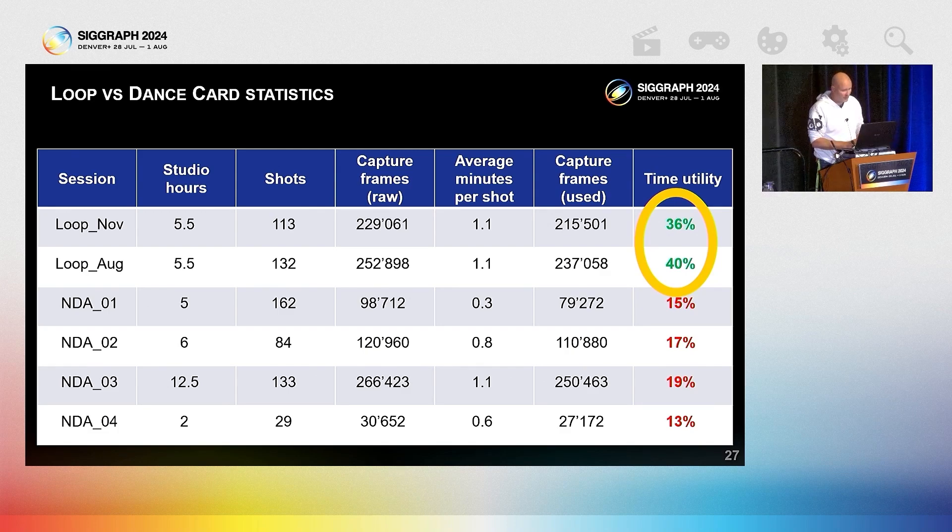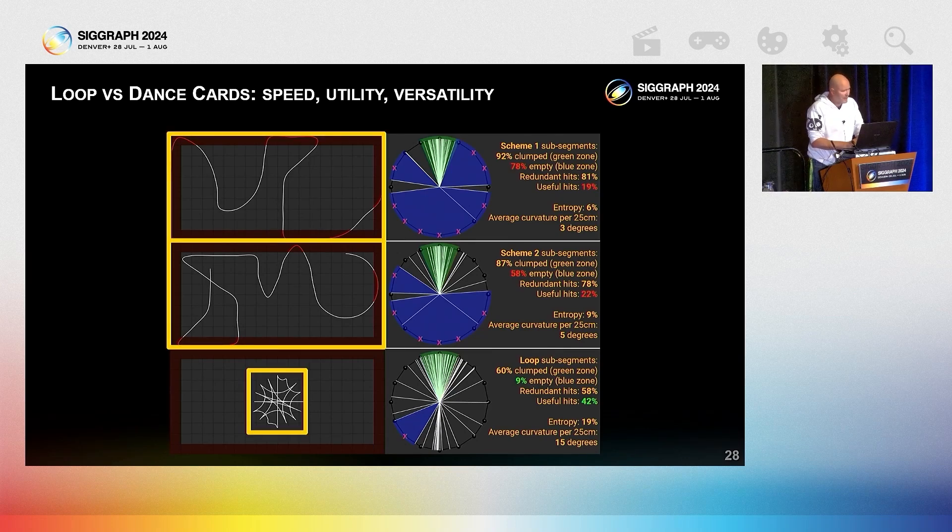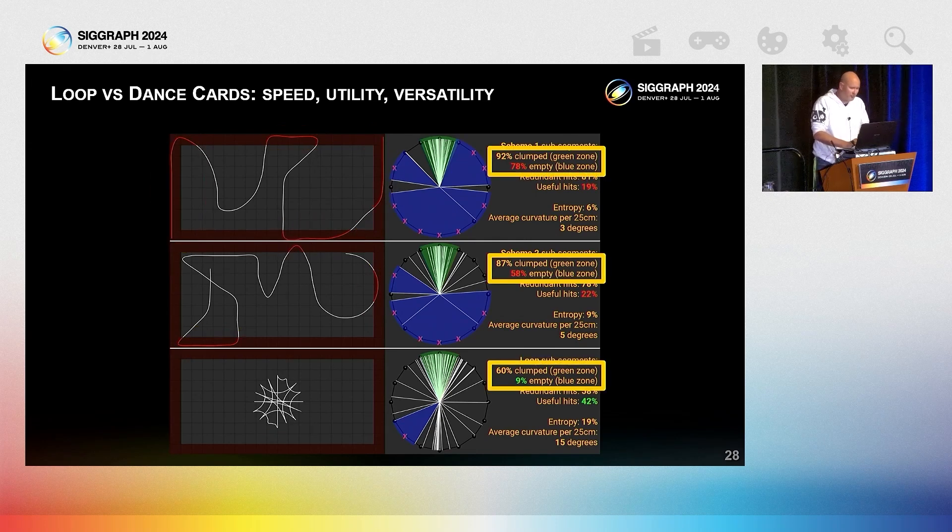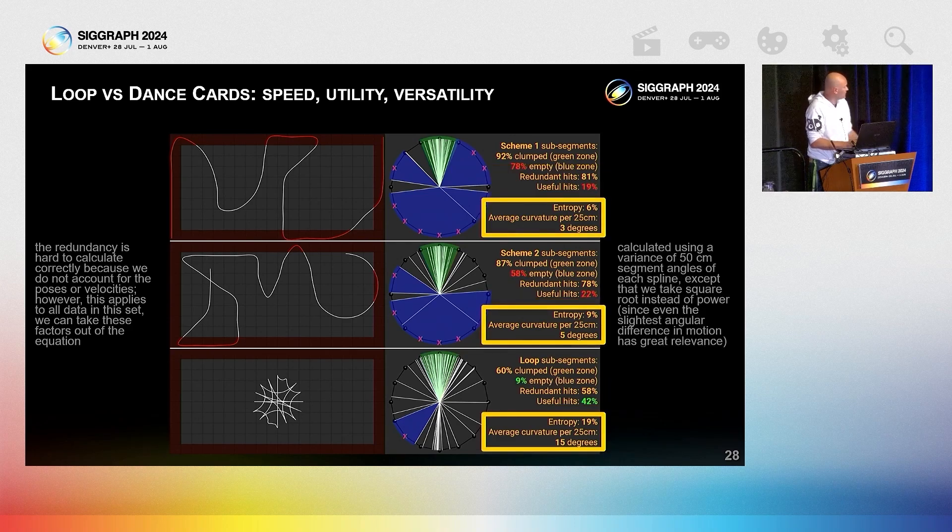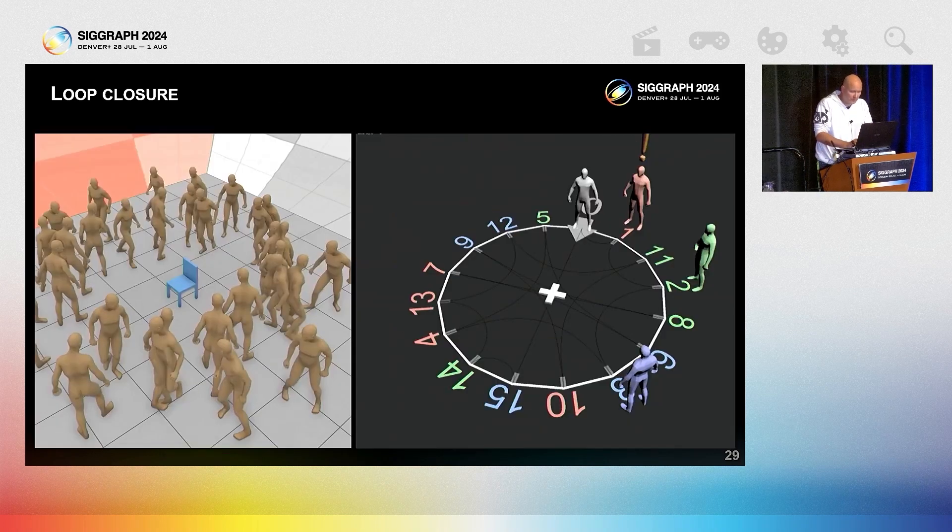We can also reason about the pass. Dance cards require a huge footprint and often get in a dead zone of multiple cameras. They mostly capture movement forward with very few turns. The redundancy suggests the dance cards result in only 20% of the data being useful, and loop doubles that. The term entropy is used loosely here to show we double or triple motion versatility with loop.